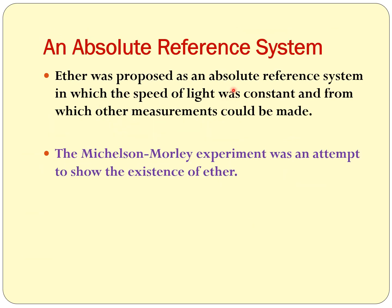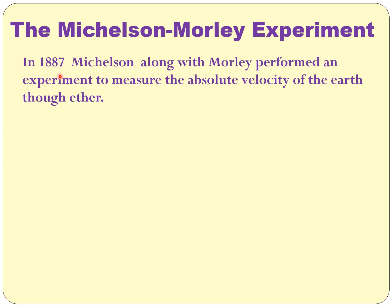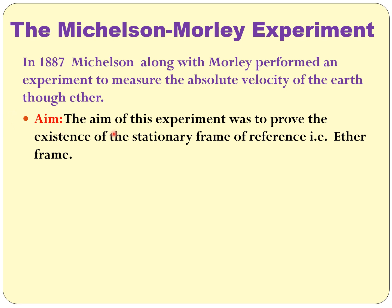Ether was proposed as an absolute reference frame in which the speed of light was constant and from which other measurements could be made — so it was assumed as the absolute frame of reference. The Michelson-Morley experiment was an attempt to show the existence of ether. In 1887, Michelson along with Morley performed an experiment to measure the absolute velocity of Earth through ether.